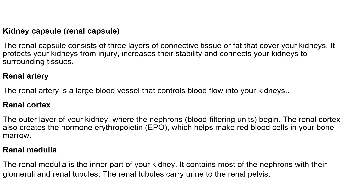You have the renal artery, which is the largest blood vessel controlling blood flow into your kidneys. You have the outer layer of the kidney known as the renal cortex, where nephrons — blood filtering units — begin. This also produces erythropoietin, which helps make red blood cells in your bone marrow. And you have the renal medulla, the inner part of your kidney, which contains most of the nephrons with the glomeruli and renal tubules.